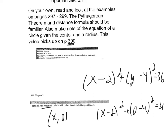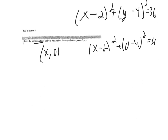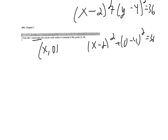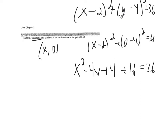I'm seeing a quadratic equation. I need to expand: (x − 2)(x − 2) gives x² − 4x + 4. Then (0 − 4) is negative 4, and squaring that gives 16. So we have x² − 4x + 4 + 16 = 36.